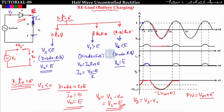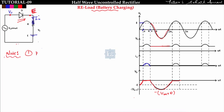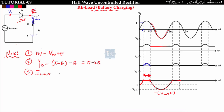Key observations: First, peak inverse voltage equals Vm plus E — the PIV of the diode increases due to the battery. Second, the conduction angle of the diode is from theta to pi minus theta, so conduction angle equals pi minus theta minus theta, which is pi minus 2*theta. Third, i_naught maximum is obtained at pi over 2.